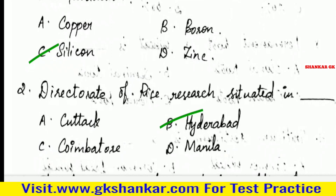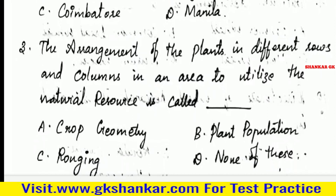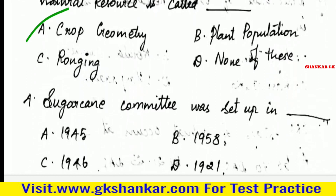Third question: The arrangement of plants in different rows and columns in an area to utilize natural resources is called — A. Crop geometry, B. Plant population, C. Rogi, D. None of these. Answer: A. Crop geometry.